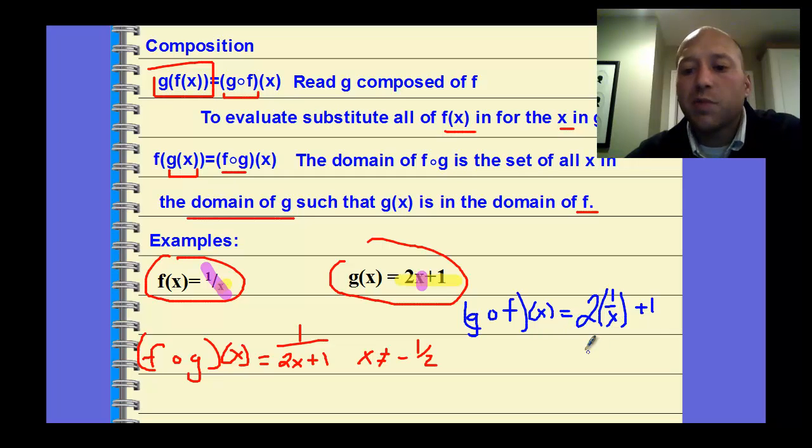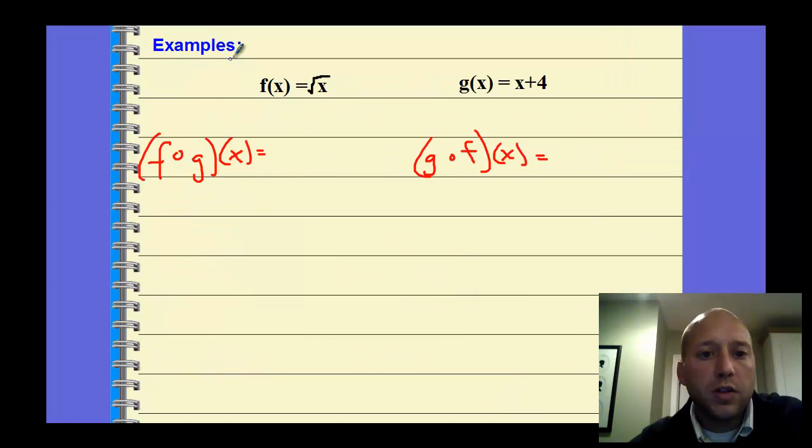Then we can simplify this. 2 times 1/x, so it could be written as 2/x + 1. And again, we have to state that x cannot equal 0. So that would be the result. These will be your homework problems for tonight. I want you to find both f(g(x)) and g(f(x)), both of those compositions, and turn that in tomorrow.